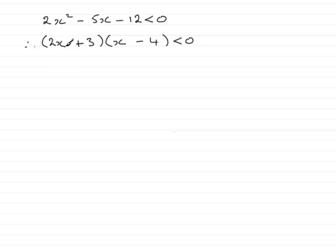Don't make the mistake now by saying that this 2x plus 3 is less than 0, or x minus 4 is less than 0. It's totally wrong.